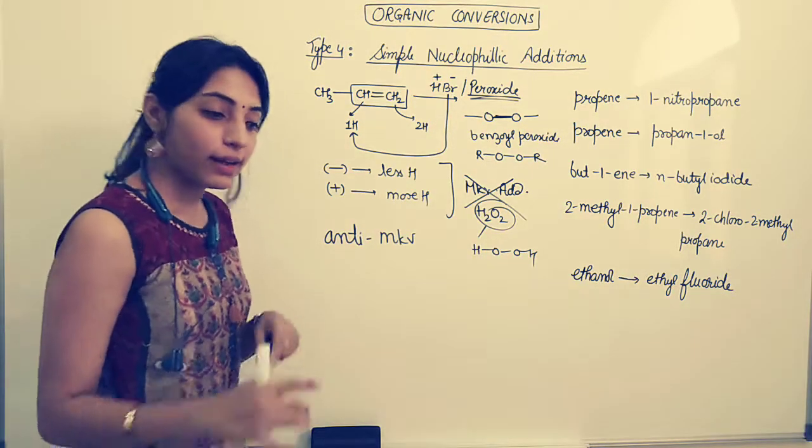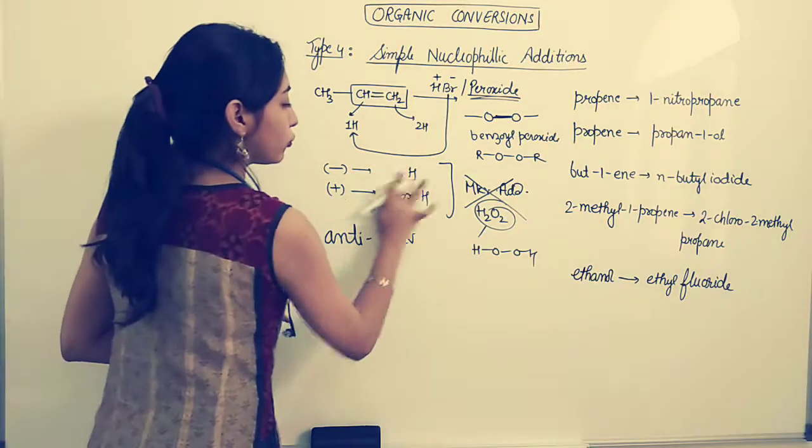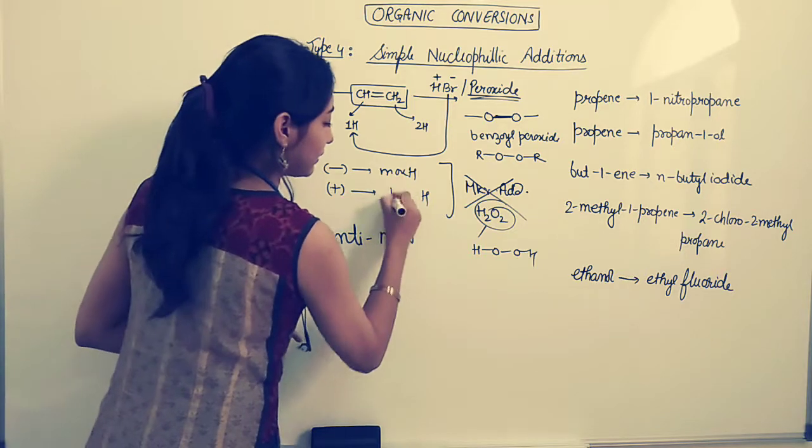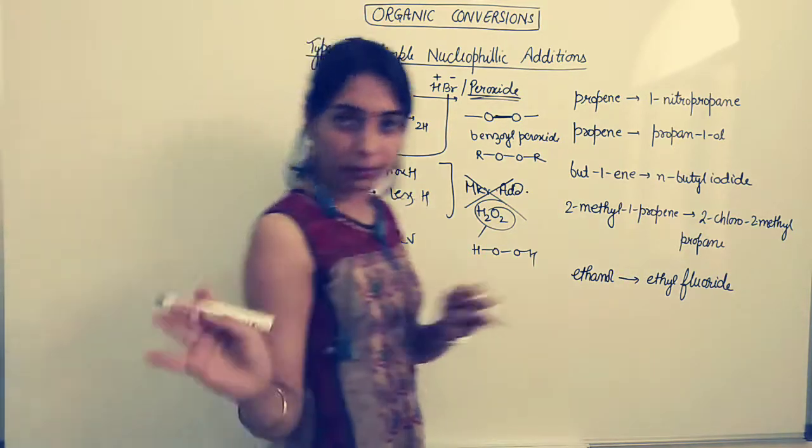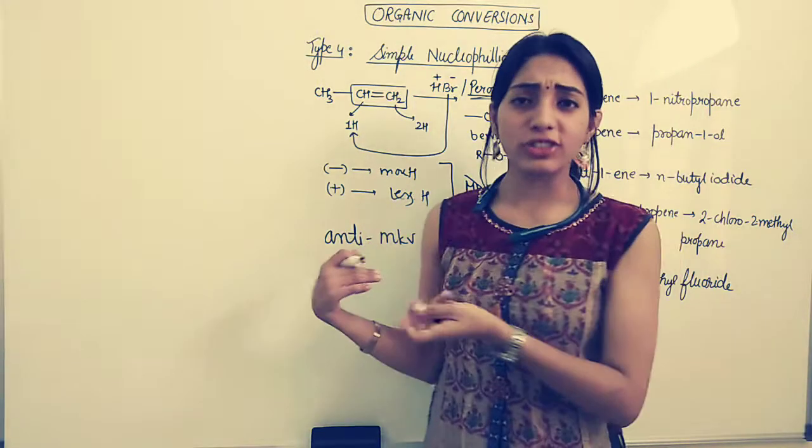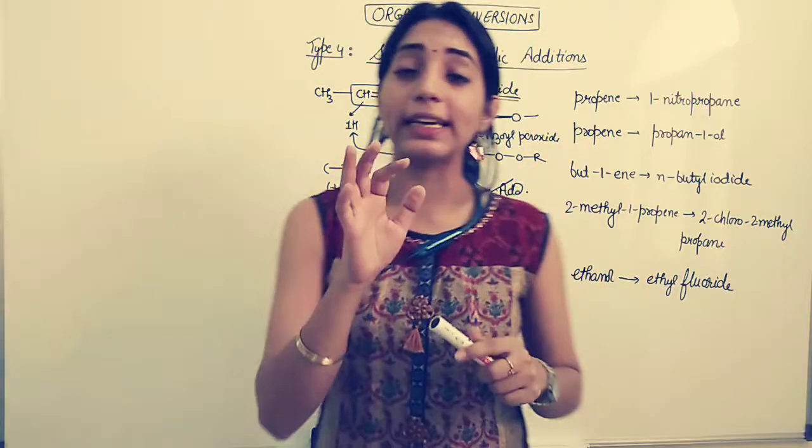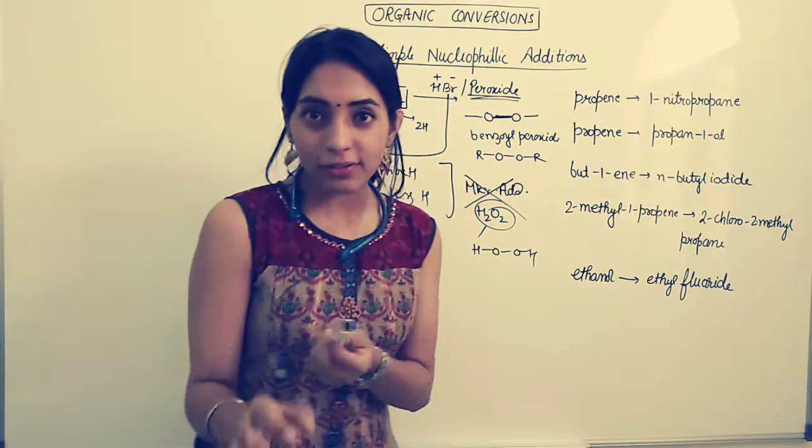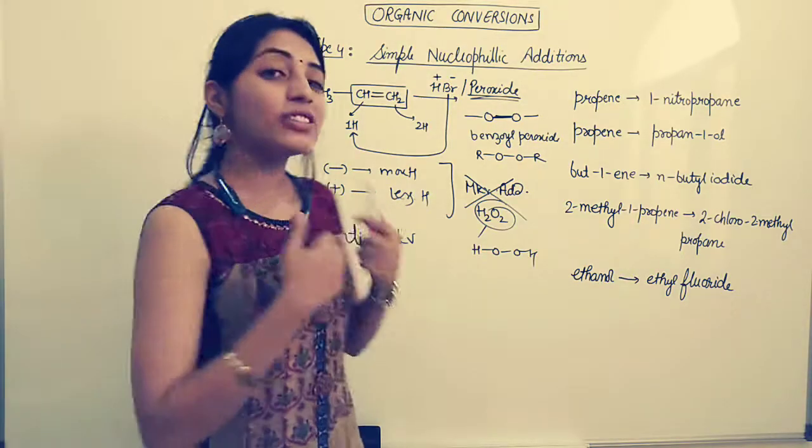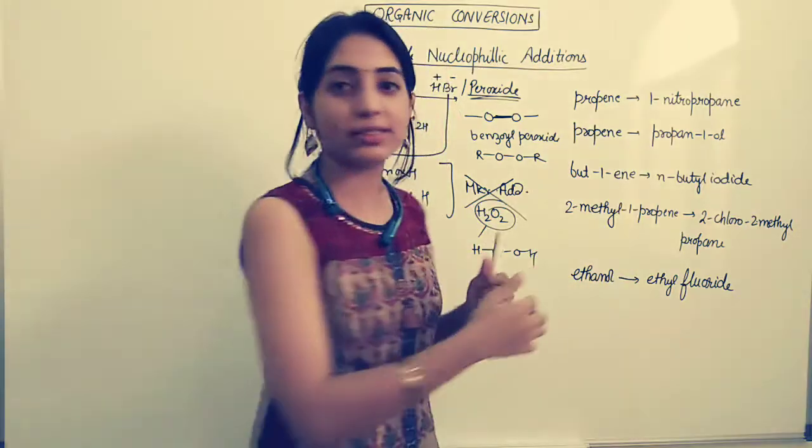We cannot apply Markovnikov's addition, we will apply anti-Markovnikov's addition. Now what happens is that anti means opposite, so the simple thing is negative goes to more hydrogen, positive goes to less hydrogen. All of you must have learned this Markovnikov, anti-Markovnikov addition in 12th. I am just assuming that you have this much background and then we will try to do more questions of this type.